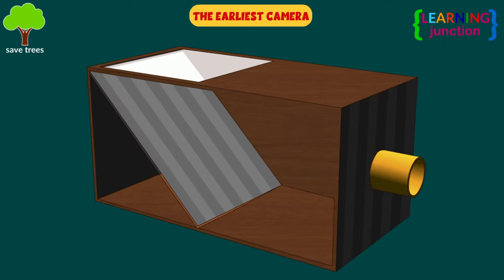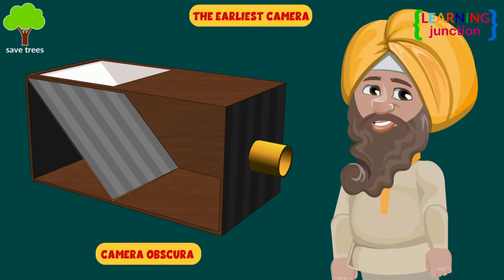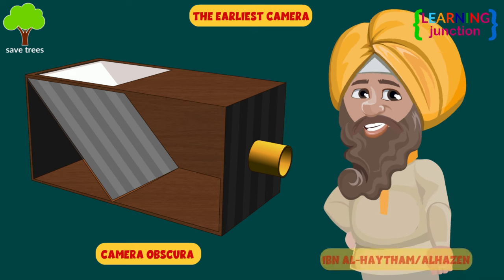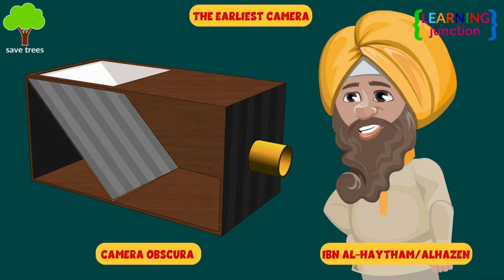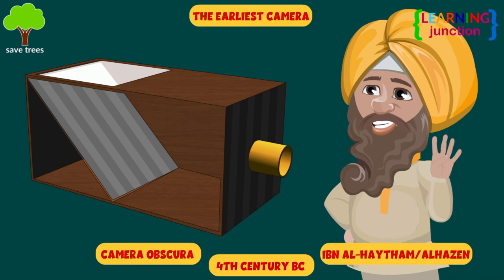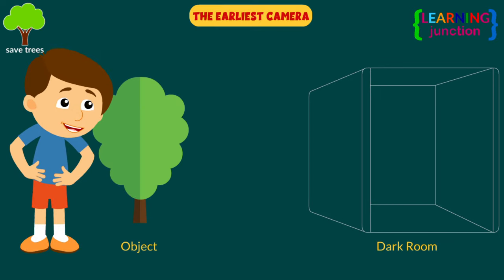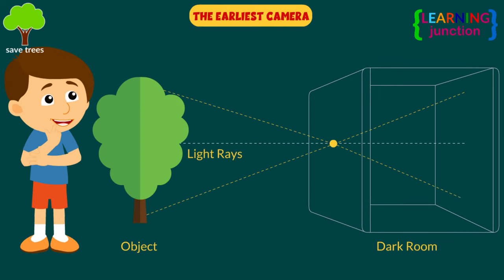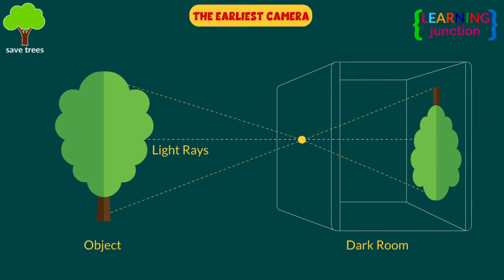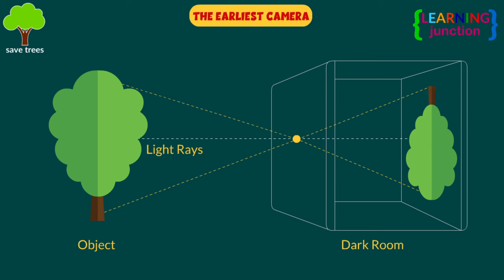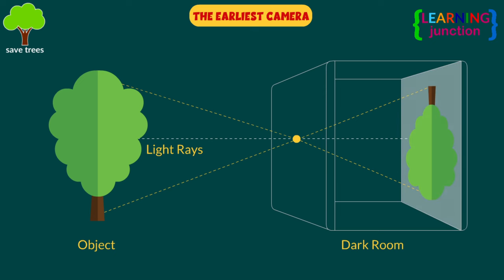The earliest camera. The first camera known to history is the camera obscura, which was invented by Alhazen in the 4th century BC. It focused light through a lens, which was technically a small hole, and projected it onto a screen.